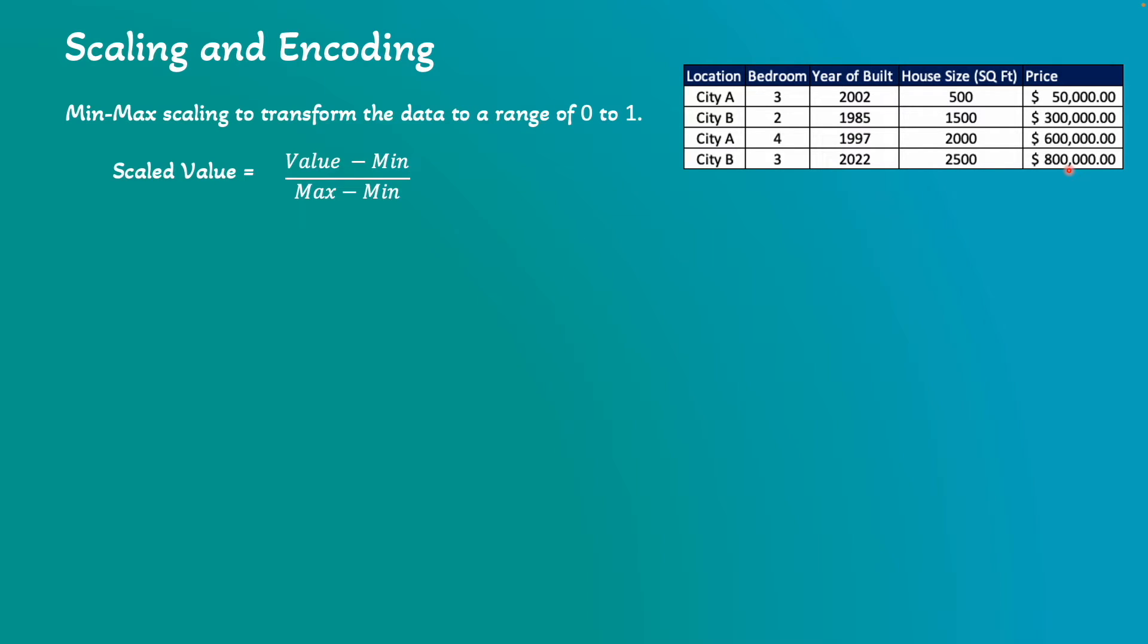We can use this formula where we can take every price, then subtract the minimum value, and then divide by the value range that is the difference of max and minimum value in the price range.